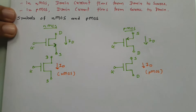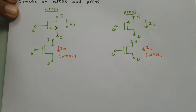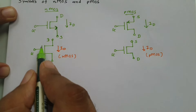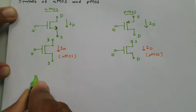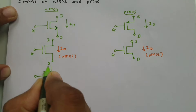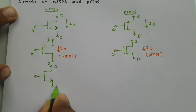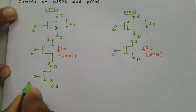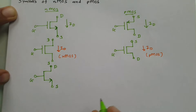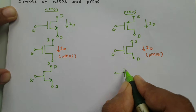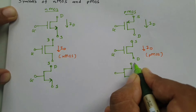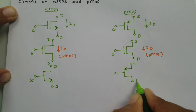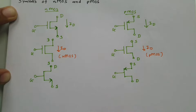There are a few more symbol variations for NMOS and PMOS. One variation shows a single gate plate instead of two parallel plates. With an outward arrow at the source, this is the NMOS symbol. Similarly, for PMOS with this single-plate style, the arrow at the source terminal points inward — that is the PMOS symbol.